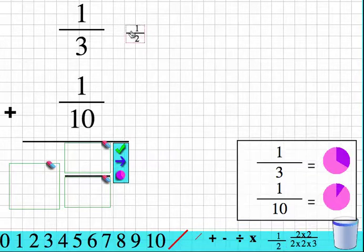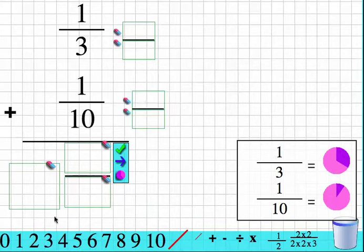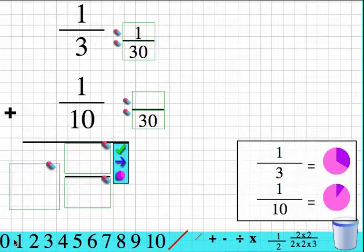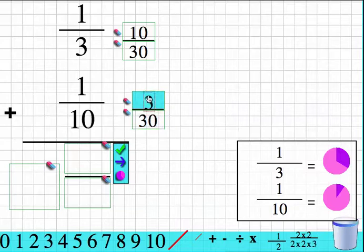So I drag my fraction up here. I find the least common denominator, which is 30. So I'm going to drag a 3 for denominators, 0, 3, and 0. So 1 third is 10 thirtieths and 1 tenth is 3 thirtieths. So my answer now is 13 thirtieths.